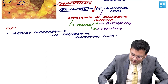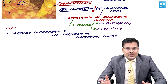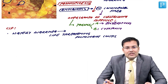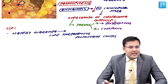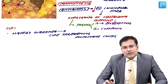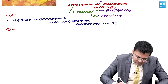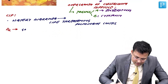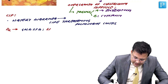Diagnosis is made by detection of one or both of these toxins. The gold standard investigation is the stool cytotoxin assay. ELISA can also be used, which is sensitive and specific, but the gold standard remains the stool cytotoxin assay.